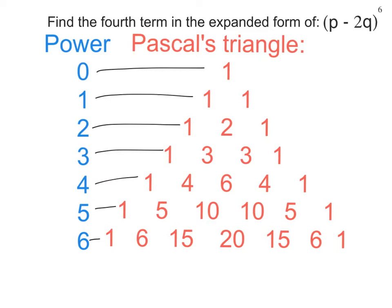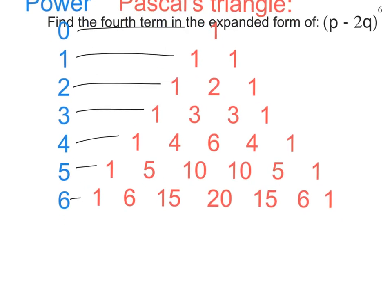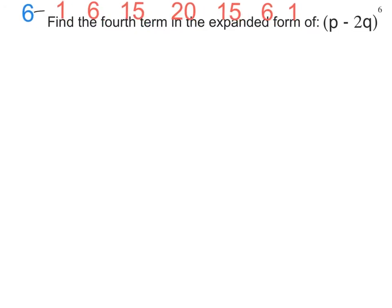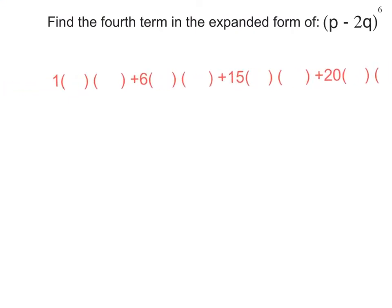What we're going to have to use is all these numbers right here as coefficients, followed by two parentheses on each number: 1, 6, 15, 20, 15, 6, and 1, each followed by two parentheses. If I rewrite those numbers followed by two parentheses after each one, that's what we end up with right there.